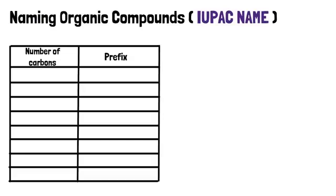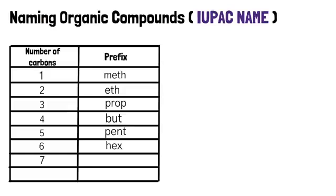Let's remember how many homologous series we have — it's nine. The number of carbons tells you the prefix. One carbon: meth. Two carbons: eth. Three carbons: prop. Four carbons: but. Five carbons: pent. Six carbons: hex. Seven carbons: hept. Eight carbons: oct. This is very important and you have to know this off by heart.